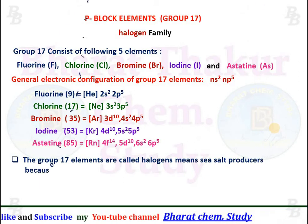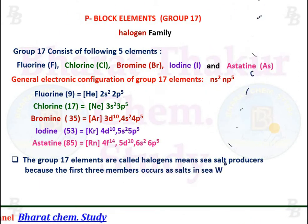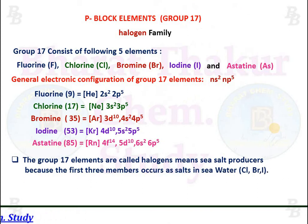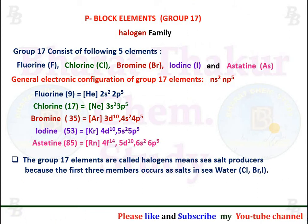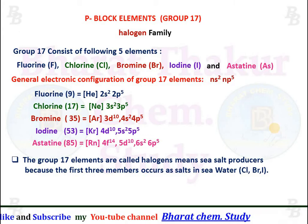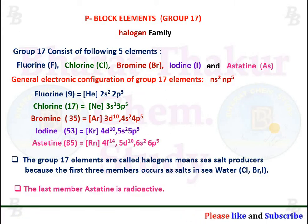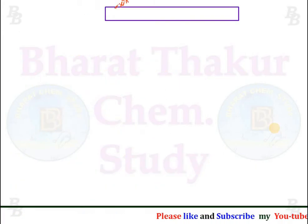Group 17 elements are called Halogens, meaning sea salt producers, because the first three members occur as salts in seawater. The last member, Astatine, is radioactive in nature.